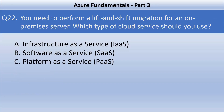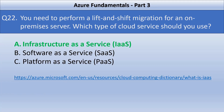You need to perform a lift and shift migration for an on-premise server. Which type of cloud service should you use? Your options are the three cloud computing models: infrastructure as a service, software as a service, or platform as a service. For a lift and shift migration of an on-premise server, you should use infrastructure as a service. This is the fastest and least expensive method of migrating an application or workload to the cloud without refactoring the underlying architecture. You can increase scale and performance, enhance security, and reduce costs.